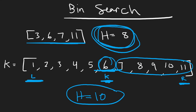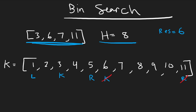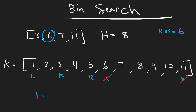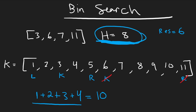With result=6 and right pointer now at 5, we compute (1+5)/2=3, so we try k=3. First pile: ceil(3/3)=1. Second: ceil(6/3)=2. Third: ceil(7/3)=3. Fourth: ceil(11/3)=4. Total: 10 hours — that exceeds our threshold of 8, so k=3 doesn't work.